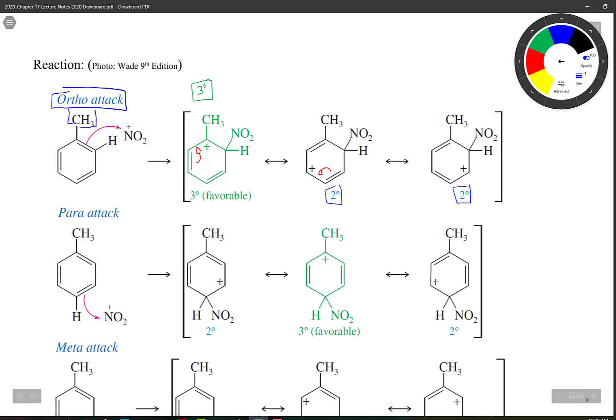If we look at para, same idea. So here's para, moving our electrons around. That gives us another tertiary. So this is favorable.